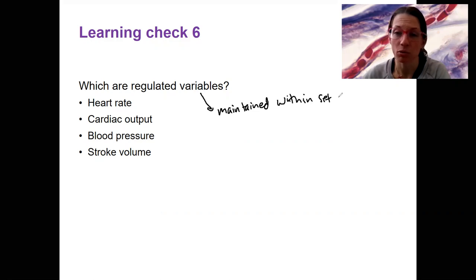A set range via homeostasis. So you need to modify your answer. That's it, right? Blood pressure is the only one of these that is maintained within a regulated set point, 120 over 80 on average.